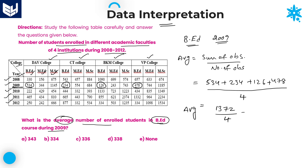The required answer is 1372 divided by 4, which equals 343. The average of all BED students enrolled in four different institutions in the year 2009 is 343. Option A is the right answer for this question.